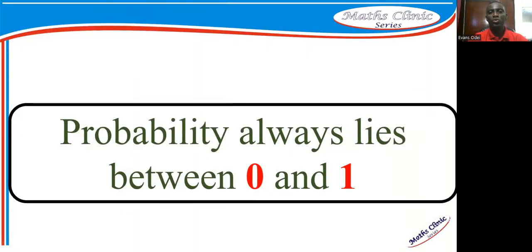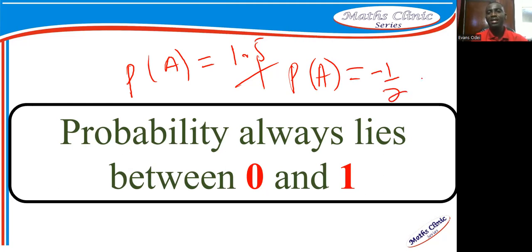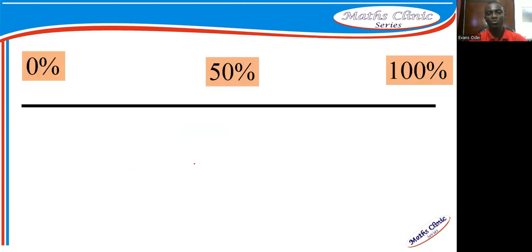Probability always lies between zero and one — that is a concept you must understand. Whenever you calculate the probability of an event occurring or not, the value you get will never exceed one and will never go below zero. If your answer comes as 1.5 or negative 0.5, you are wrong. In terms of percentage, it must not go beyond 100% or below 0%.